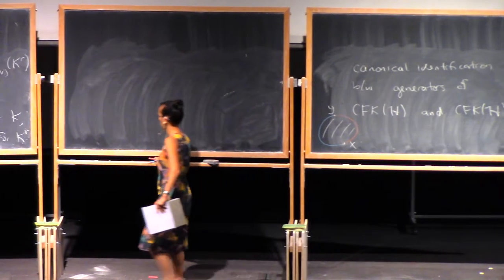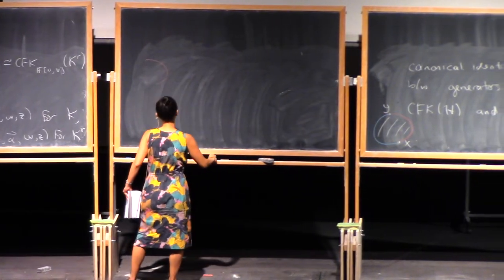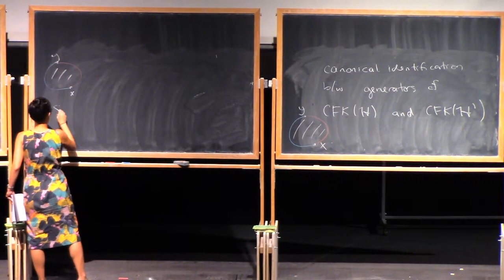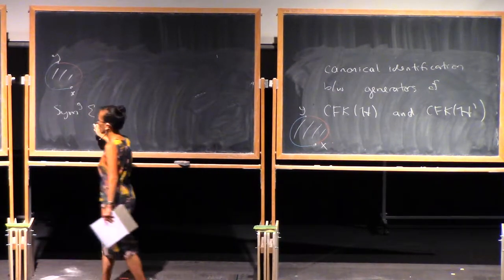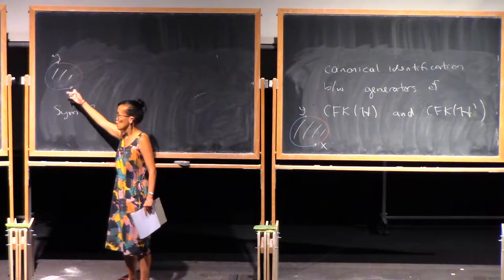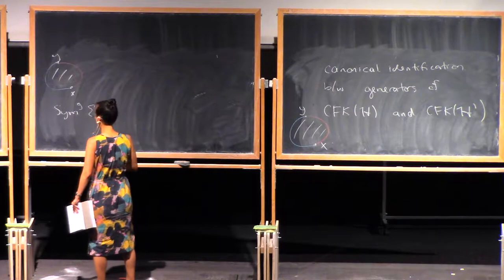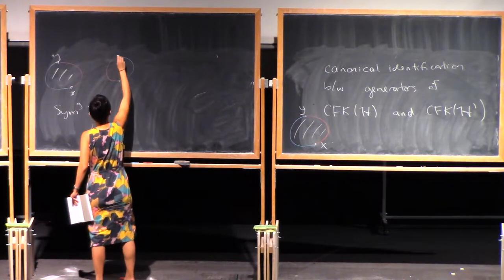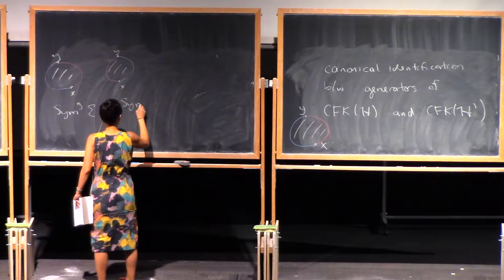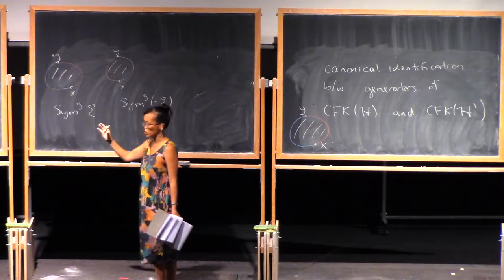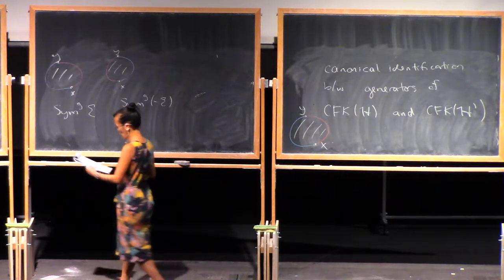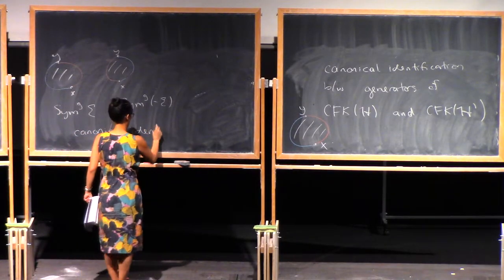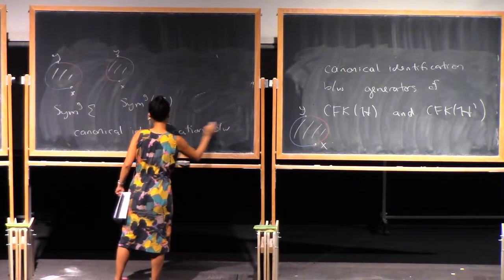The point is, if you saw a disk from X to Y in Sym^g of sigma, and you switch the alphas and betas — so the red and blue switch — but you also switch the orientation of sigma, then we get a canonical identification between the two chain complexes.